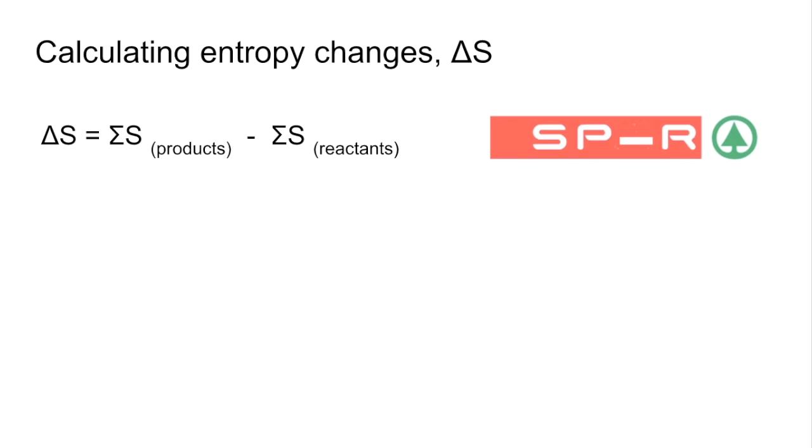And I use this silly way to remember. So the SPAR logo, you've got the S for entropy and then P before R, products minus reactants.